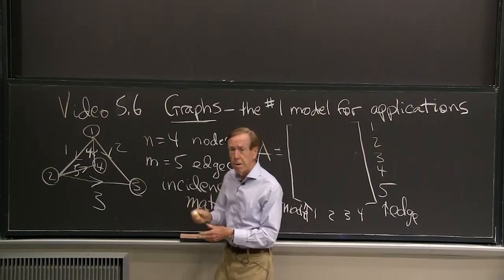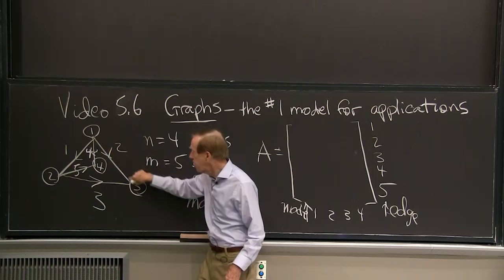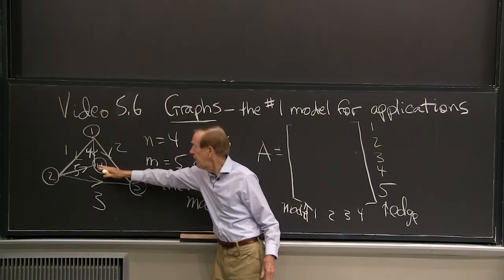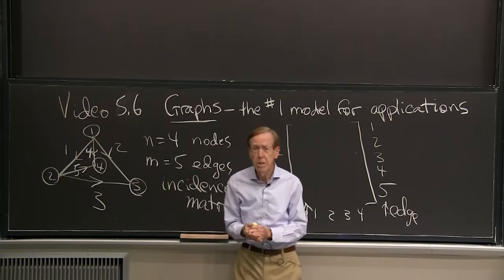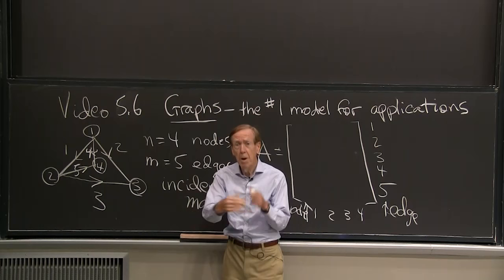The number m is the number of edges that connect the nodes. So I have edge 1 connecting those nodes, edge 2, edge 3, 4, and 5, and I didn't put in an edge 6. A complete graph would have all possible edges. But a general graph can have some edges. Some pairs of nodes are connected. Others are not connected.